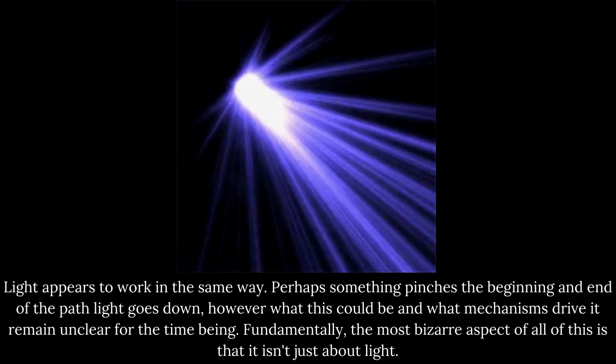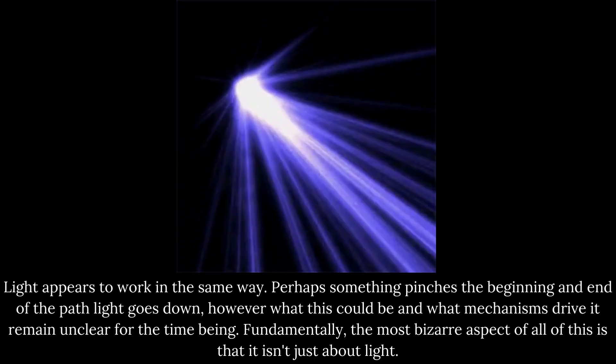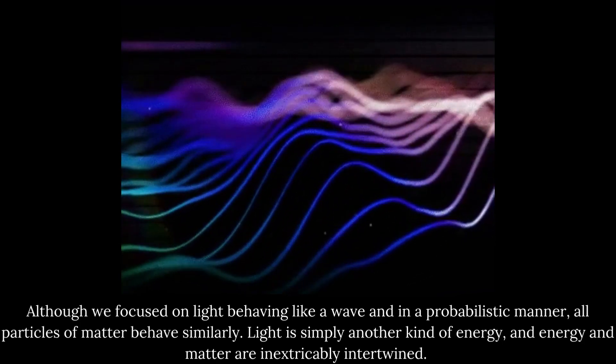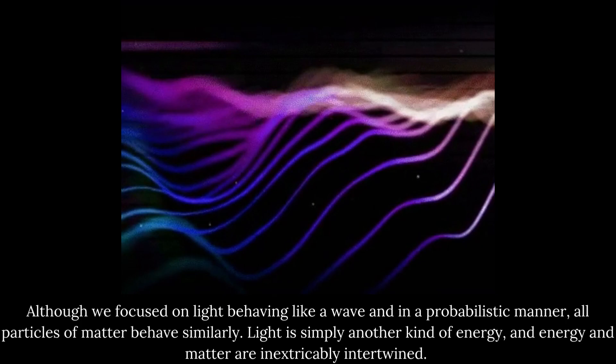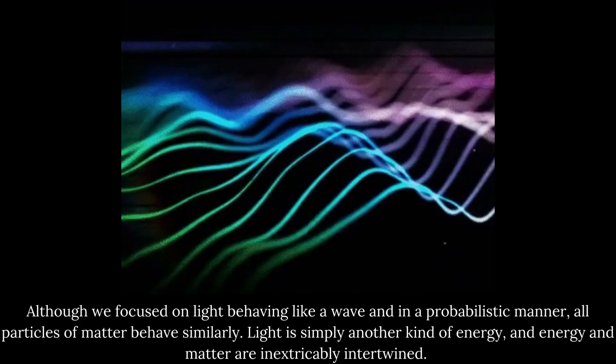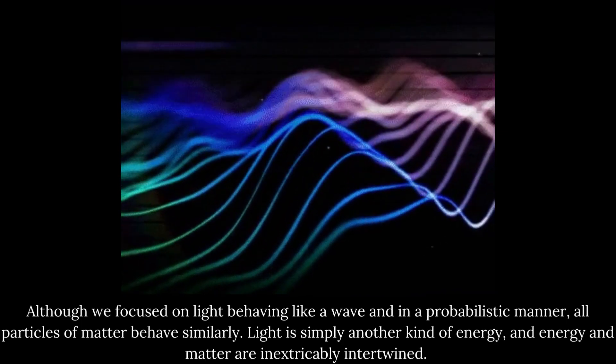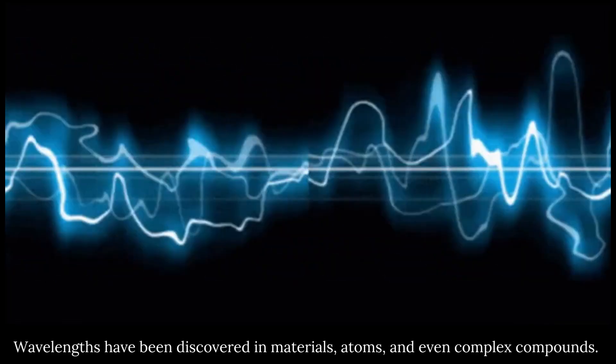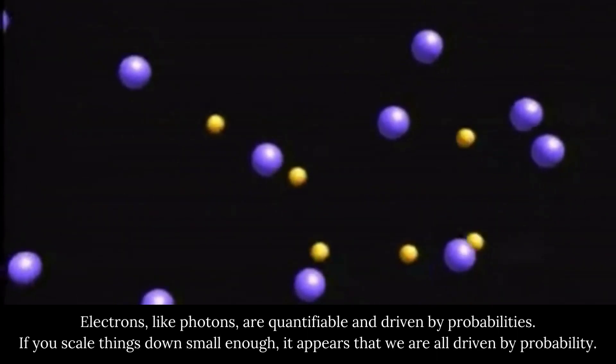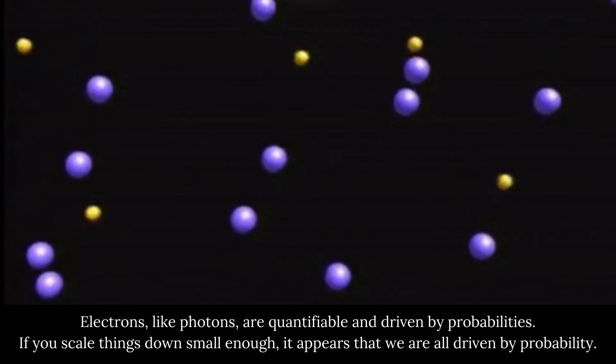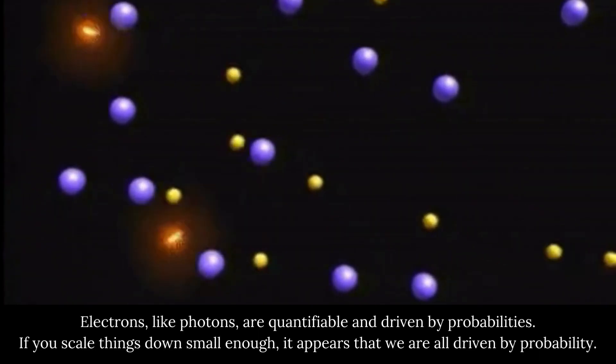Fundamentally, the most bizarre aspect of all of this is that it isn't just about light. Although we focused on light behaving like a wave and in a probabilistic manner, all particles of matter behave similarly. Light is simply another kind of energy, and energy and matter are inextricably intertwined. Wavelengths have been discovered in materials, atoms, and even complex compounds. Electrons, like photons, are quantifiable and driven by probabilities. If you scale things down small enough, it appears that we are all driven by probability.